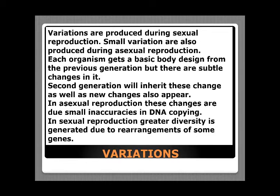Variations are not only produced in sexual reproduction — in asexual reproduction also these small changes are produced, but they are less compared to sexual reproduction. Now these offspring have certain variations in their bodies. When these offspring mature and give birth to the second generation, this second generation inherits the variations of the first generation, and certain new variations are also added. In this way, variations keep accumulating.